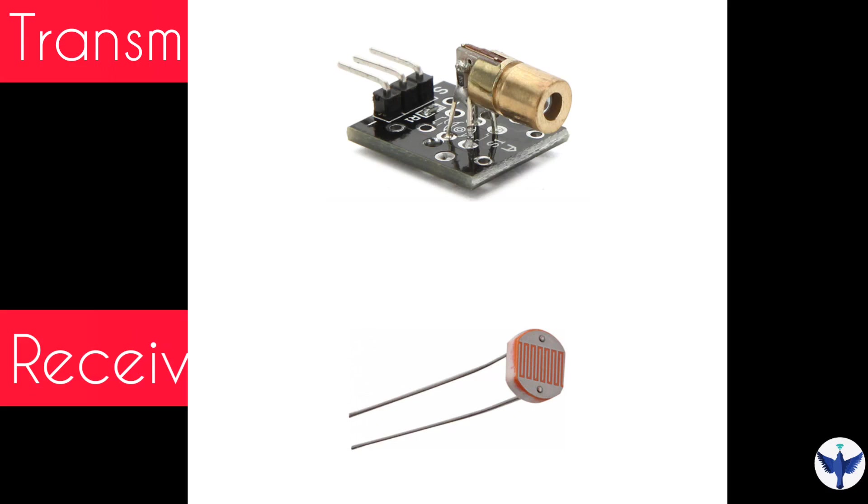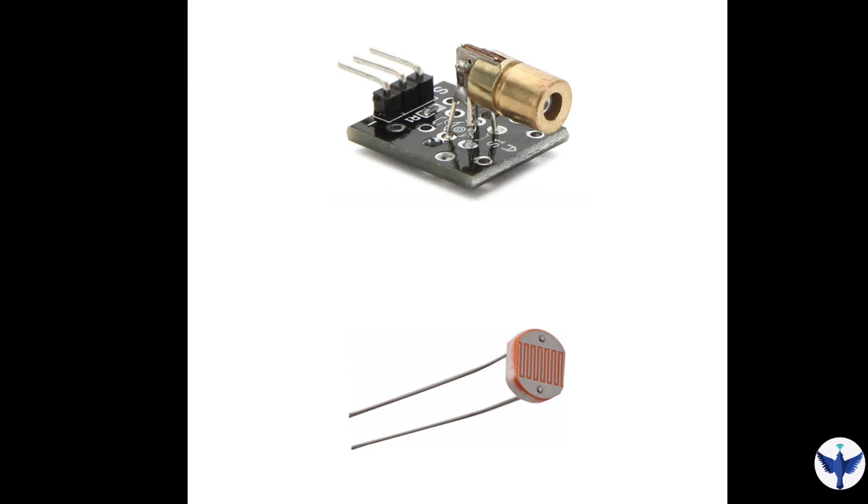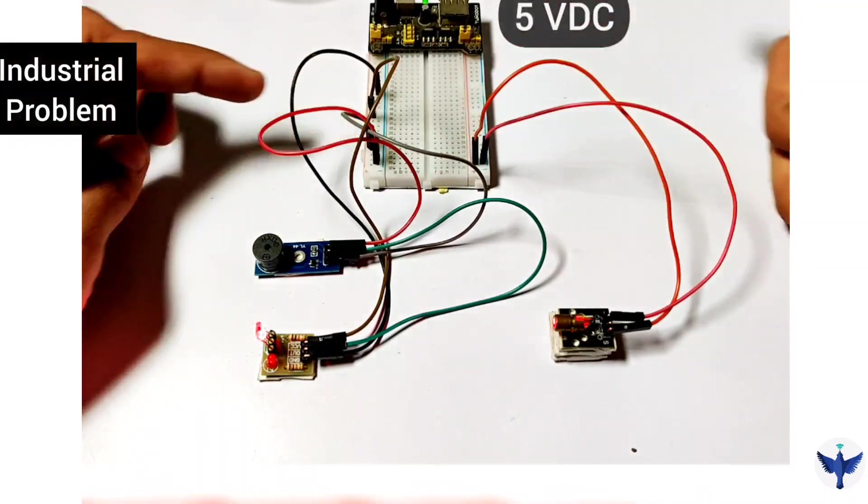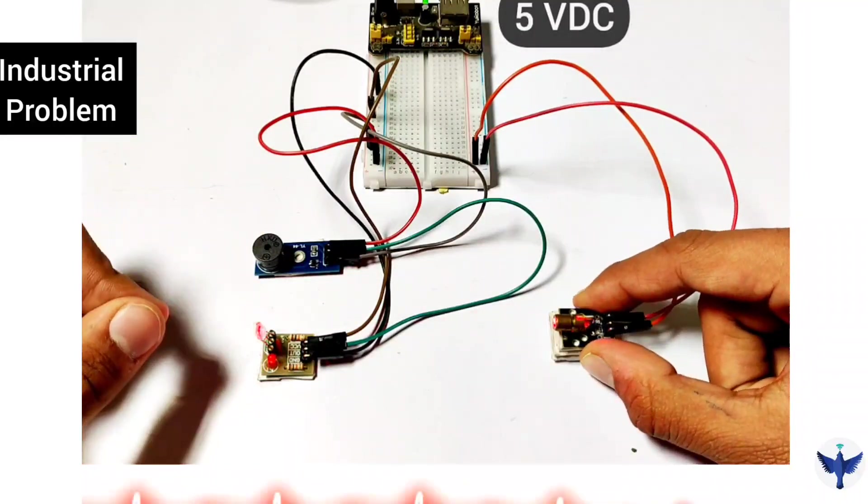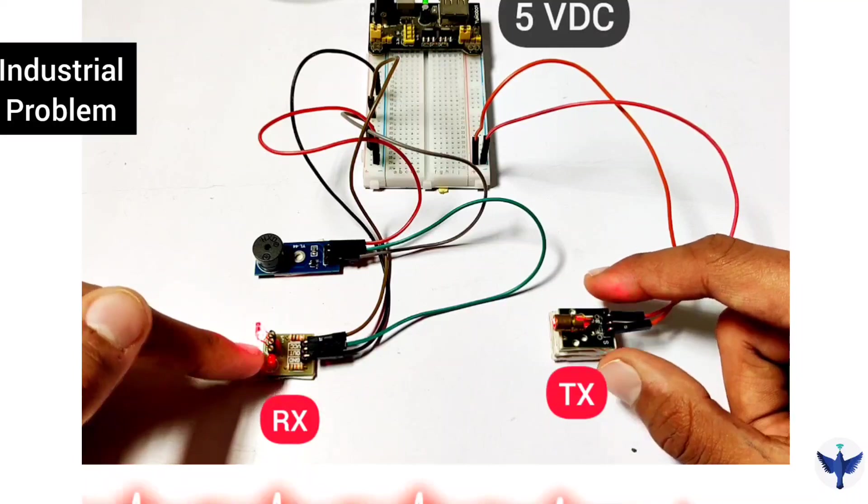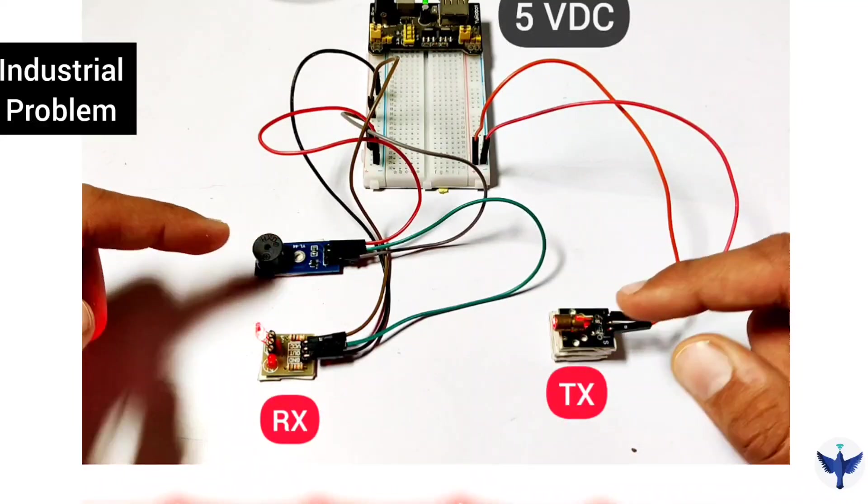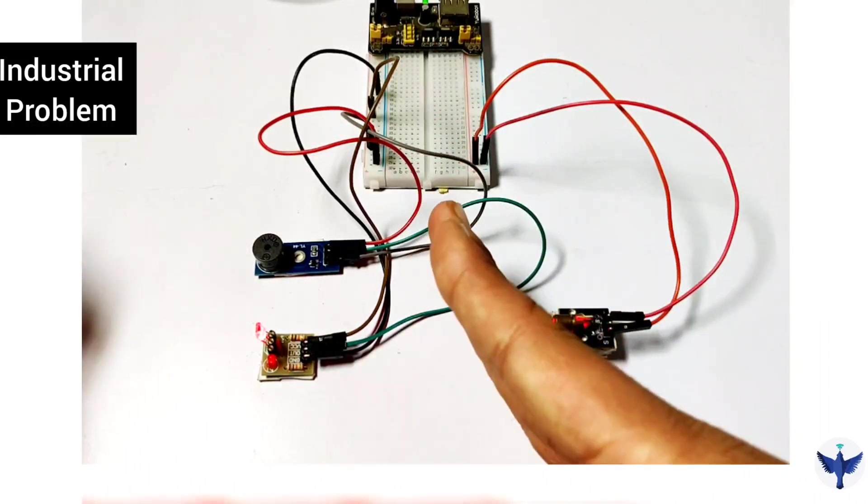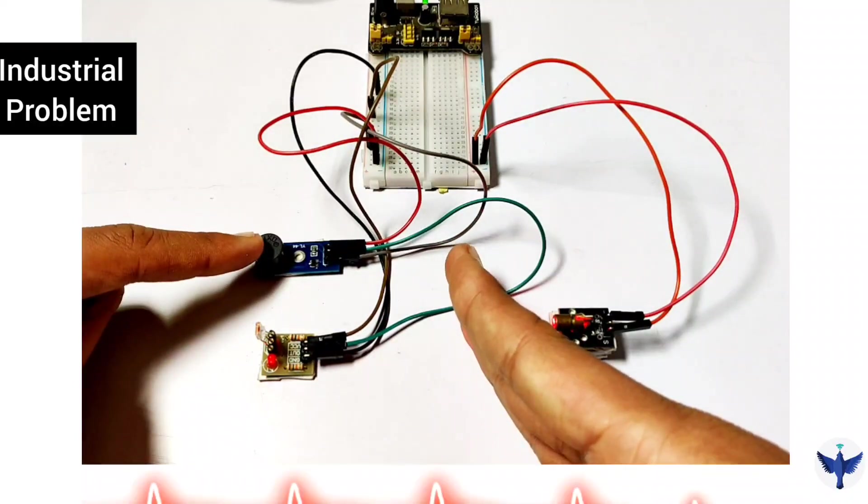So now we will see an industrial problem in the laser sensor. Here is my power supply which is giving power to my laser transmitter and laser receiver which works on 5 volt DC. In the output I have connected a simple buzzer. So when I obstruct this laser I get the output and the buzzer goes on.